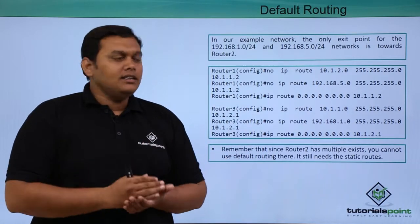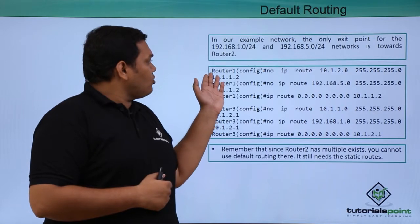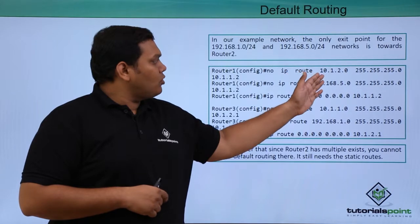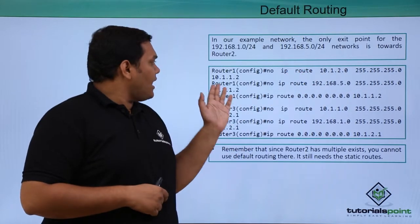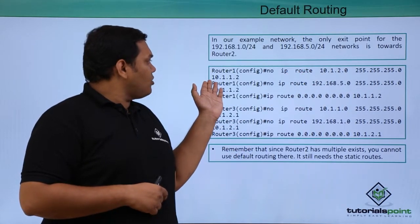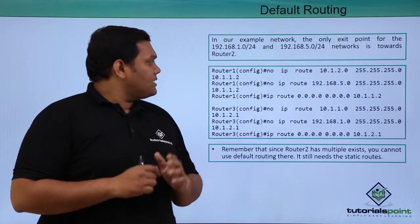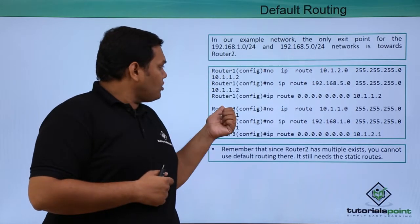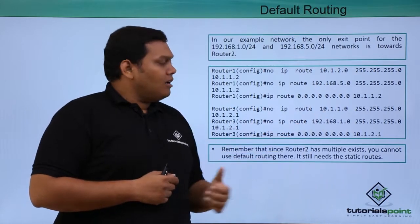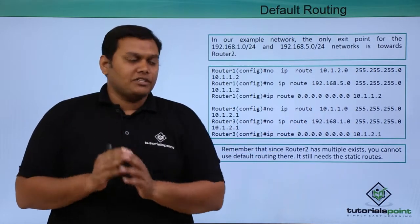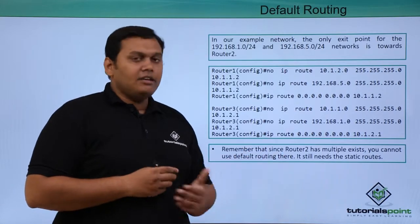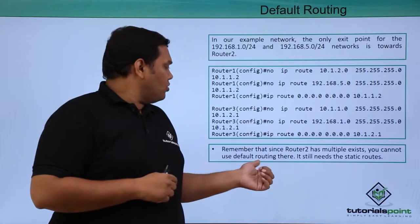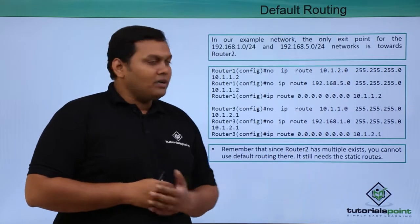To configure the default route for Router 1 in global configuration mode: IP route 10.1.2.0 with the wildcard mask and the exit interface 10.1.1.2. The same approach applies to Router 2 and Router 3, which are also configured with their respective exit interfaces. The default route is very similar to a static route. Note that Router 2 has multiple exits.